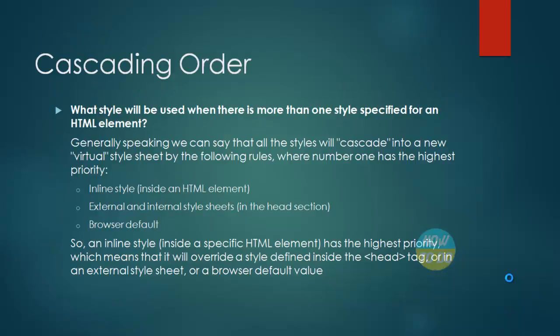The cascading order — what style will be used when there is more than one style specification for an HTML element? Generally speaking, all styles will cascade into a new virtual style sheet by the following rules, where number one has the highest priority. Number one is the inline style given inside an HTML element. Number two is external and internal style sheets in the head section. Number three is the browser default value. So an inline style has the highest priority, meaning it will override styles defined in the head tag, an external style sheet, or the browser default.